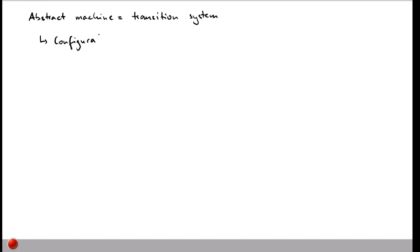Each configuration of our abstract machine is a triple consisting of three things: our control stack C, the result stack R, and the memory M. Let's be precise about what can be in each of these elements.